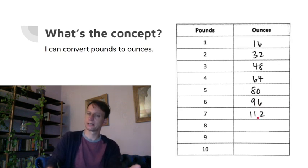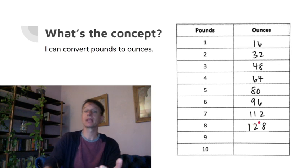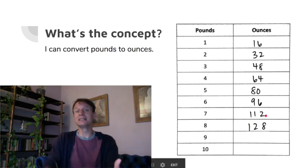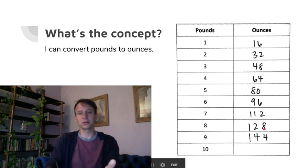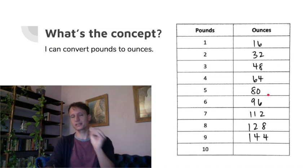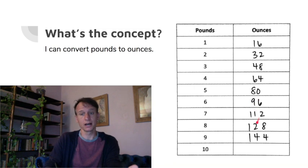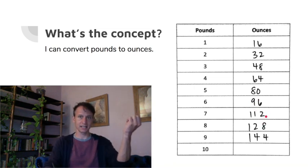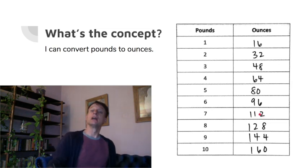Add sixteen to ninety-six and you get one hundred twelve for seven pounds. Eight pounds — add another sixteen, no regrouping — one hundred twenty-eight. Nine pounds: add sixteen, you get one hundred forty-four. That should be a familiar-looking number — twelve times twelve, a dozen dozens, also known as a gross. And ten pounds is easy — just slide: one hundred sixty.